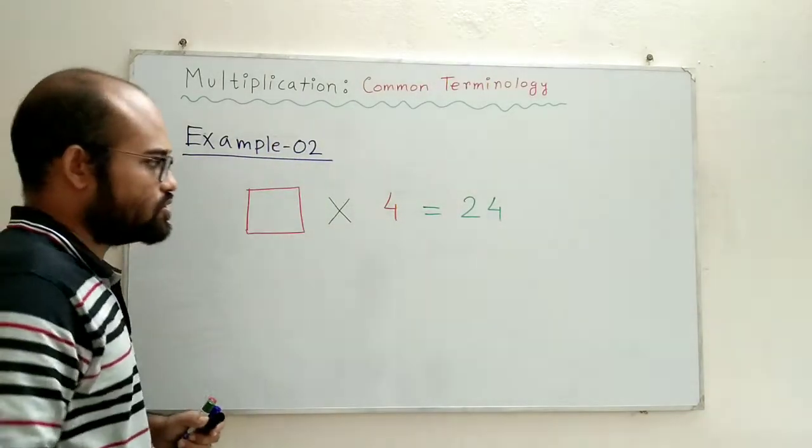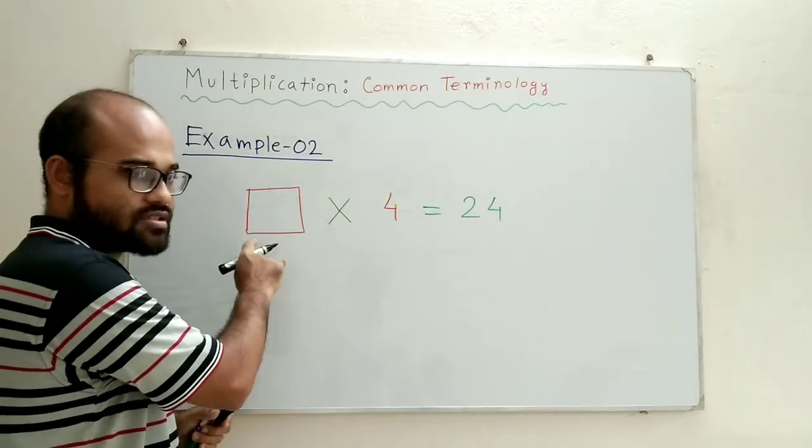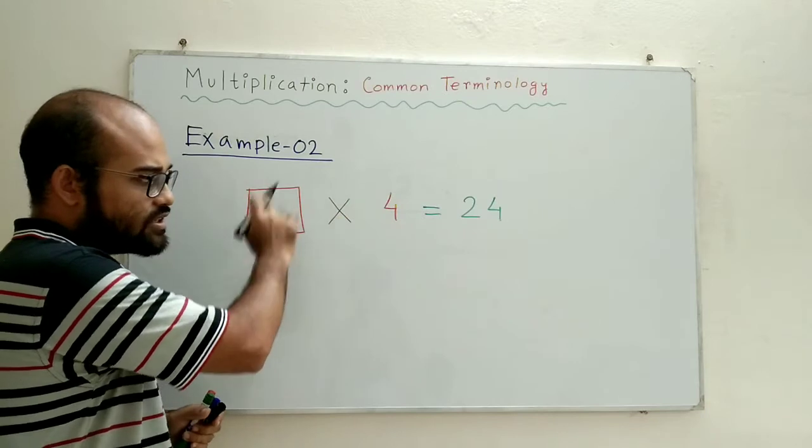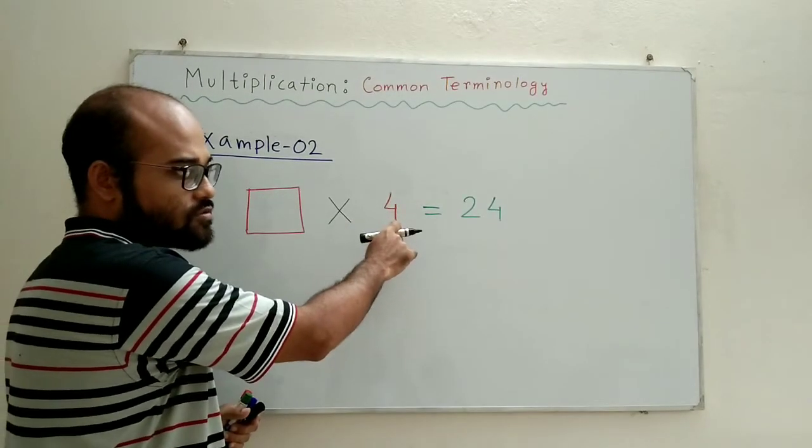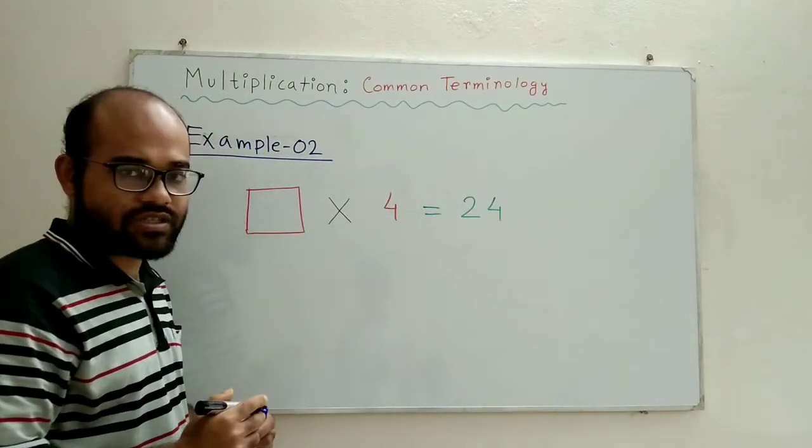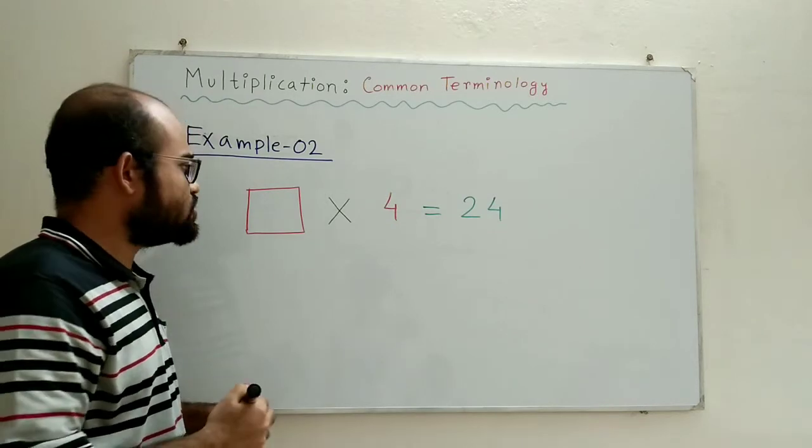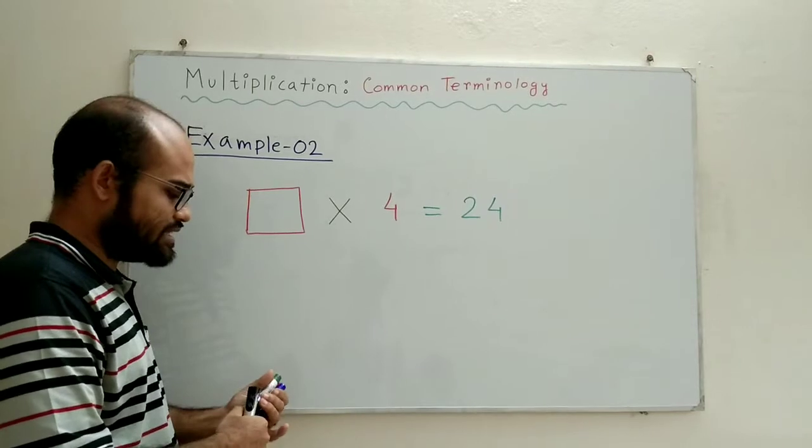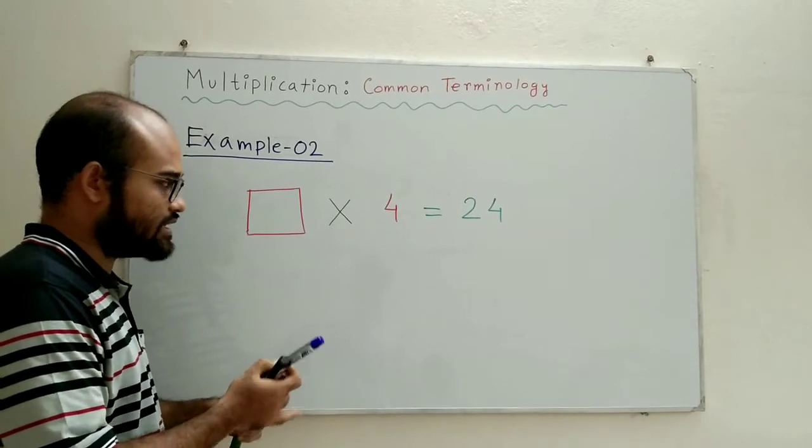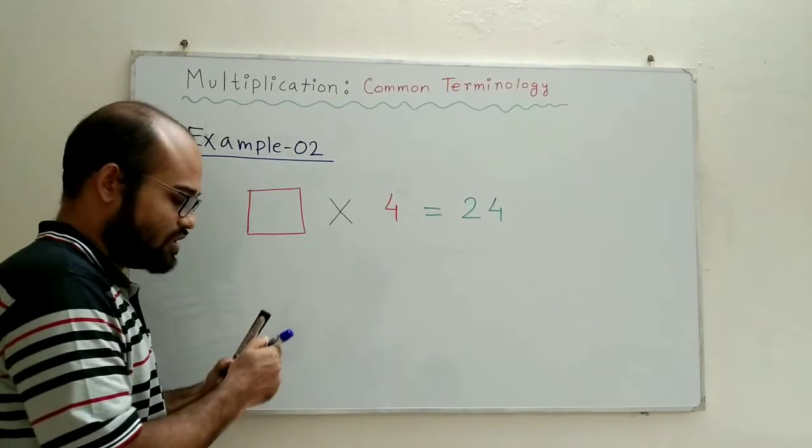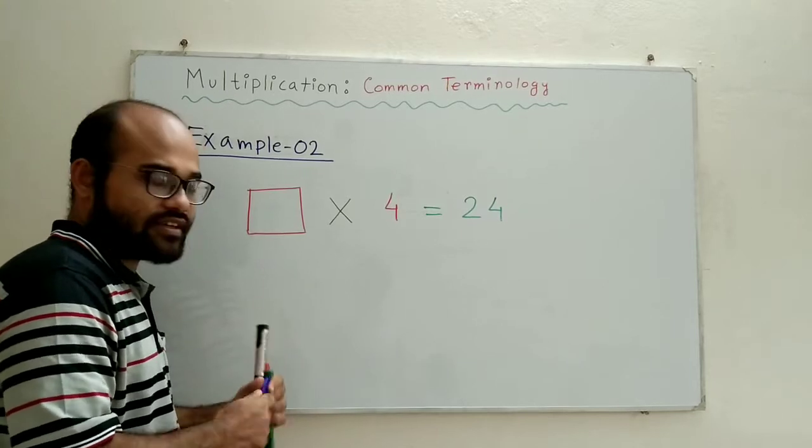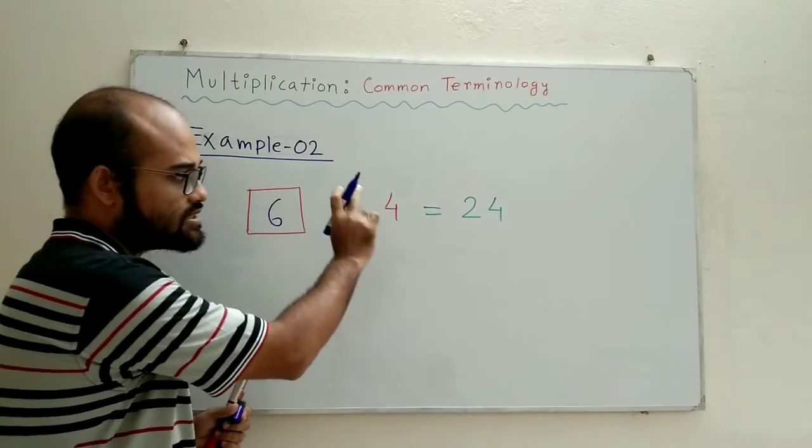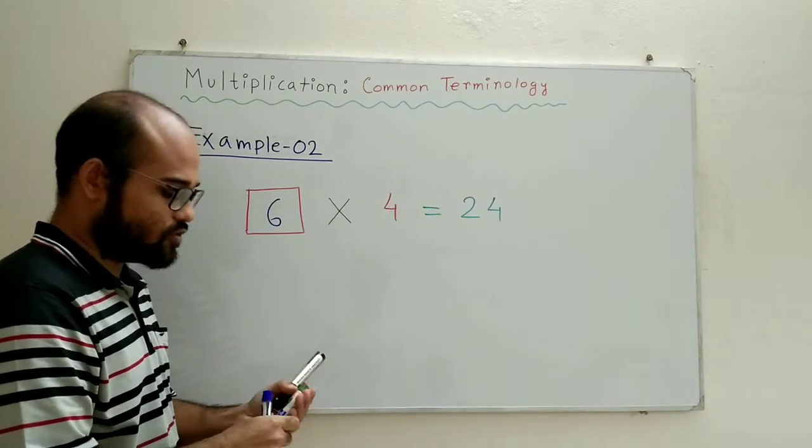In example 2, we have a blank box where there will be some number. When I multiply the number in the blank box by 4, what do I get as a product? 24. Now using our experience from the previous example, we can easily say that the number in the blank box will be no other number than 6 because only 6 times 4 gives us 24.